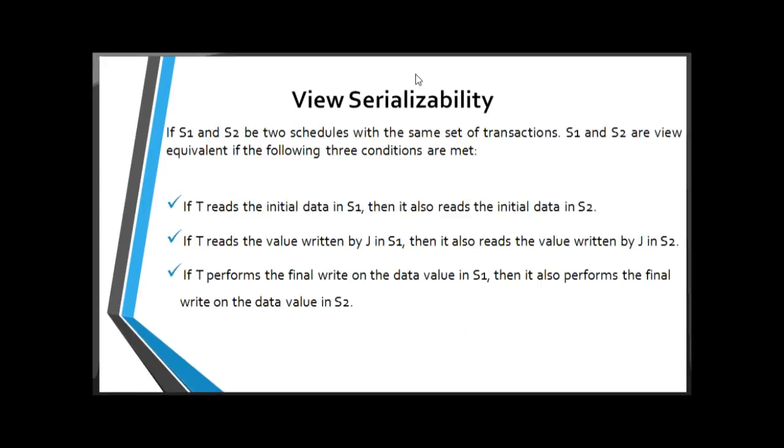Next slide is about View Serializability. If Schedule 1 and Schedule 2 have the same set of transactions, then Schedule 1 and Schedule 2 are view equivalent if the following three conditions are met: If the transaction reads the initial data in Schedule 1, then it also has to read the initial data in Schedule 2. If transaction T reads the value written by J in Schedule 1, then it also reads the value written by J in Schedule 2. If the transaction performs the final write on the data value in Schedule 1, then it also performs the final write on the data value in Schedule 2, and hence the data concurrency is maintained.